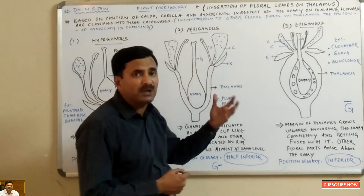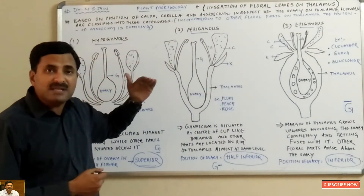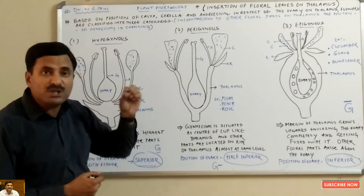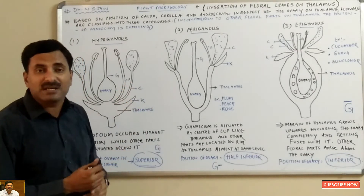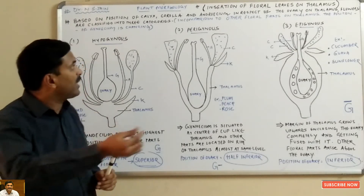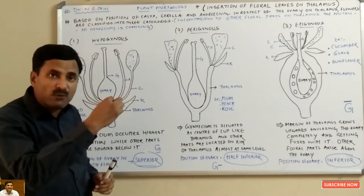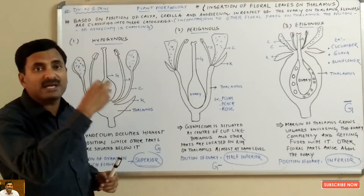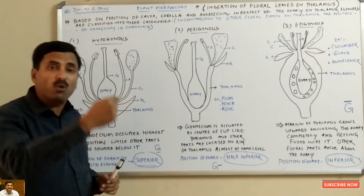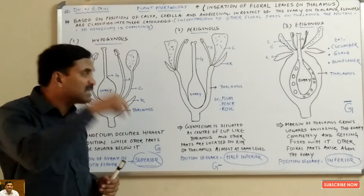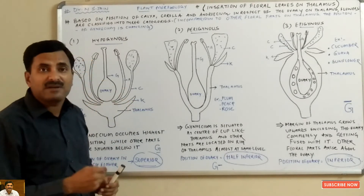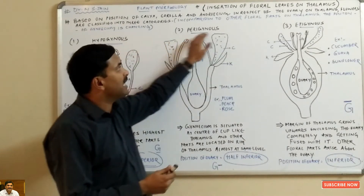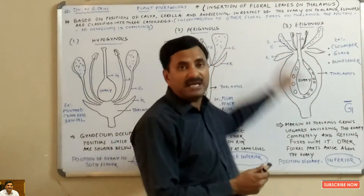In comparison to the other floral parts on the thalamus, the position of the ovary is regularly changing — it is not fixed. On this basis, we can say that flowers are of three types: hypogynous flower, perigynous flower, and epigynous flower.